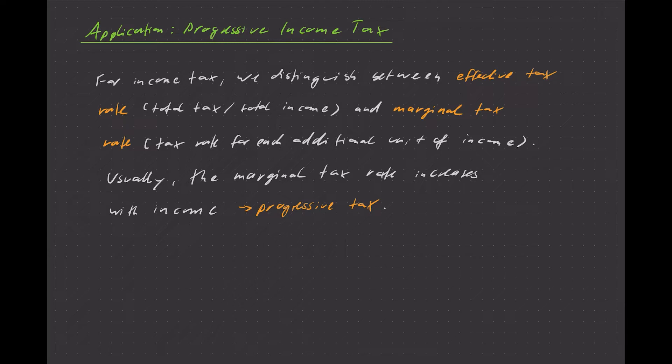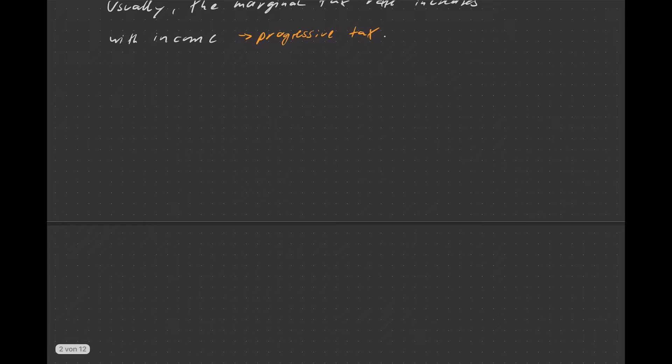We're going to consider an example of such a taxation system today. Let's make a few quick notes. For income tax, we distinguish between two tax rates: one is usually called the effective or average tax rate, that would be your total tax divided by total income, and the other one is the marginal tax rate.